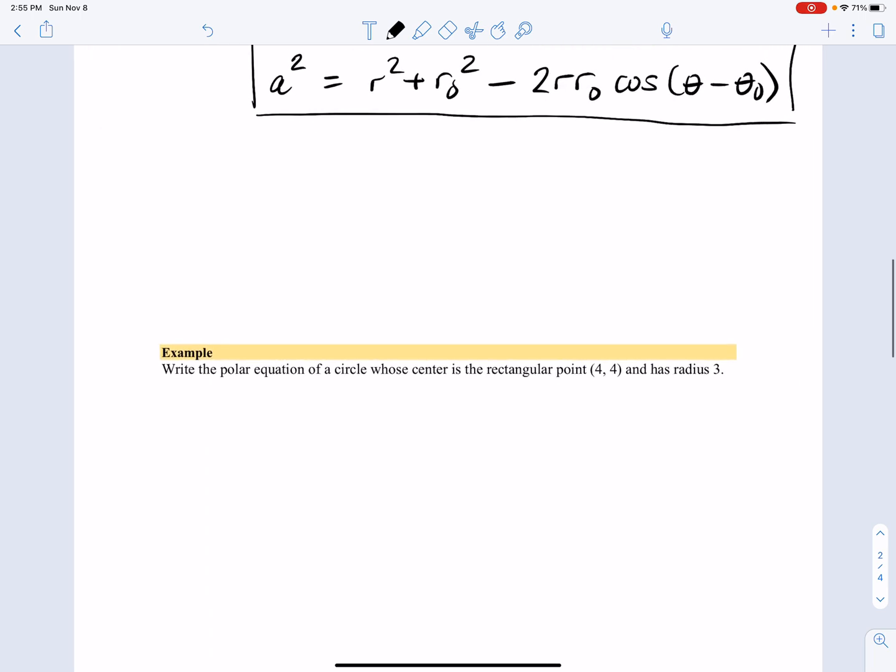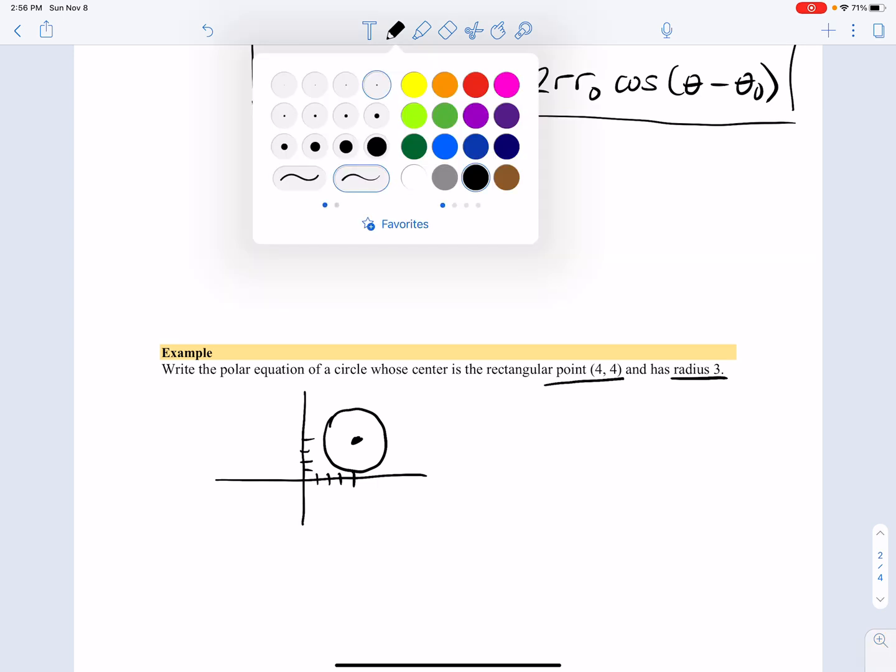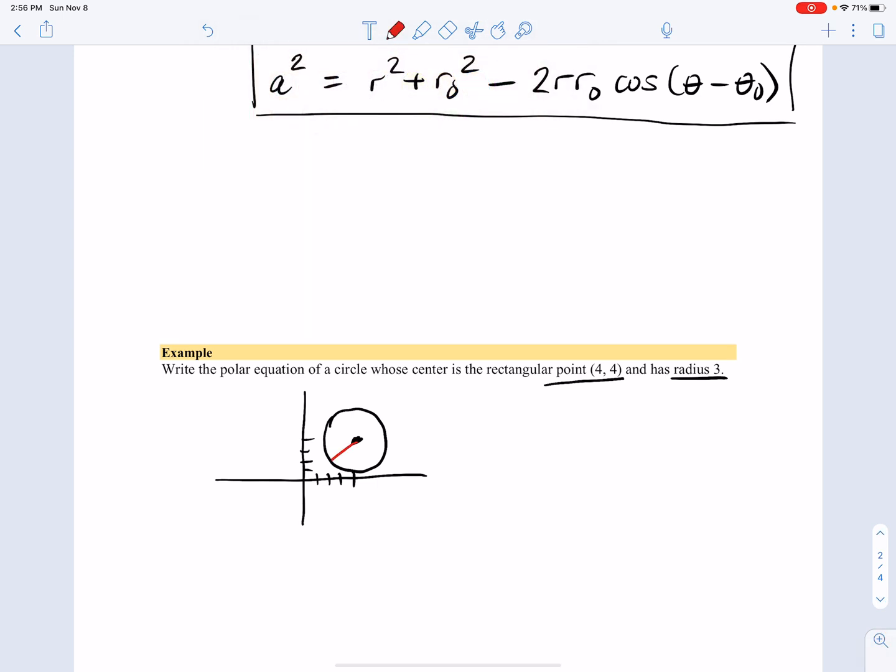So just to use this idea. Let's say we have a polar equation of a circle whose center is at the rectangular point (4, 4) and has radius 3. So if I draw a picture, (4, 4) has radius 3. We know it doesn't breach the axes. We're talking about something like this.